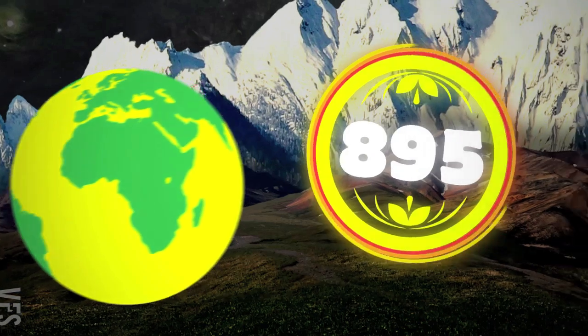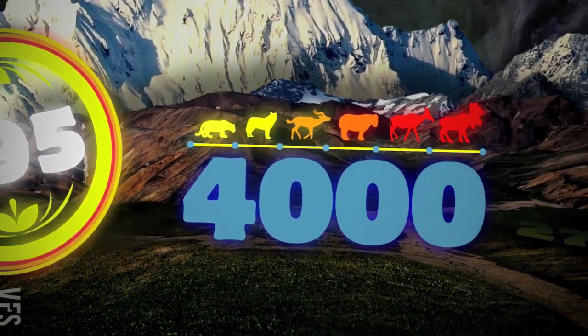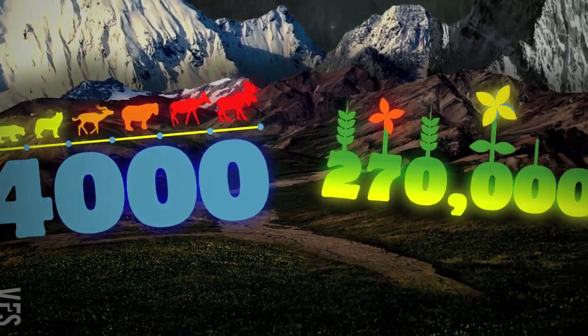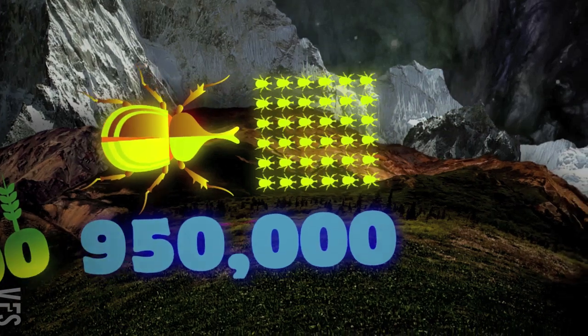The earth has 895 separate ecological regions. They are home to over 4,000 different species of mammals, 270,000 species of plants and 950,000 species of insects.